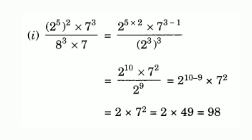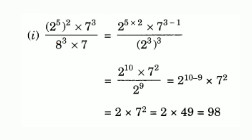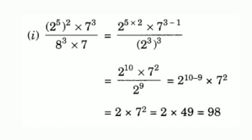2 raised to 5, all raised to 2 — this is the first number. Here we have a double exponent. To calculate this, multiply the exponents: that is 5 into 2, giving 2 raised to 5 into 2. On the numerator we have 7 raised to 3, and in the denominator, 7 raised to 1. Apply the division laws of exponents.